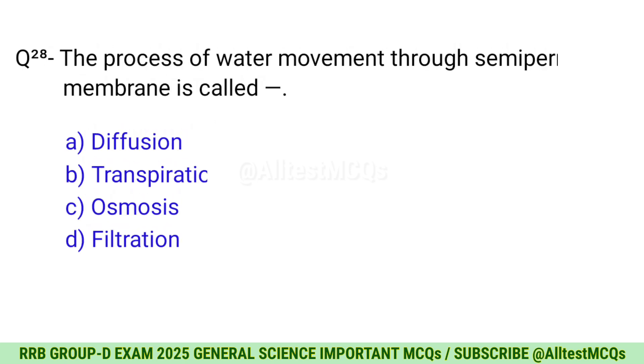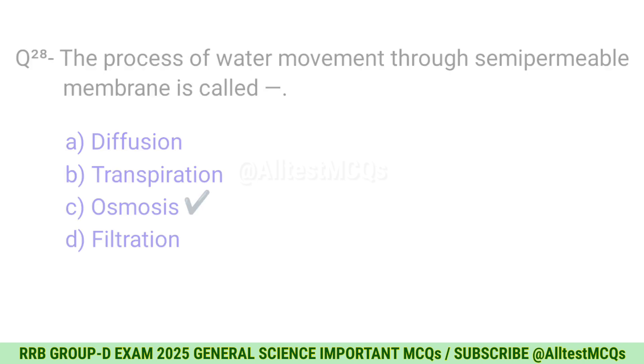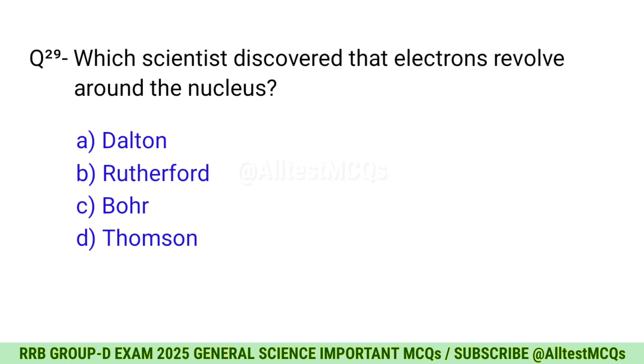Question 28: The process of water movement through semi-permeable membrane is called? The right option is C, Osmosis. Question 29: Which scientist discovered that electrons revolve around the nucleus? Correct option is B, Rutherford.